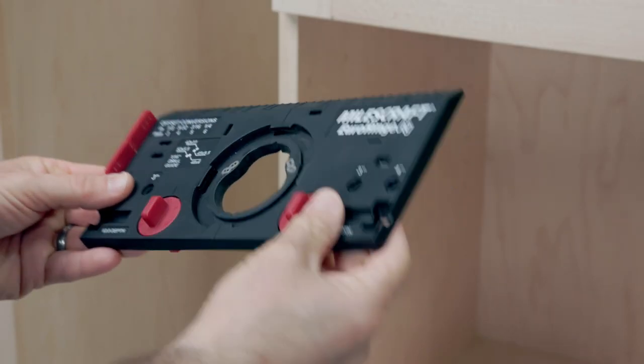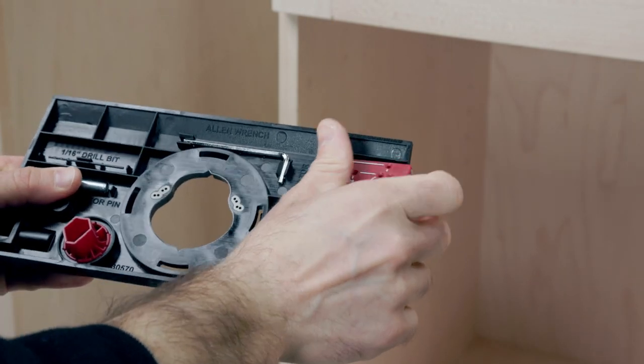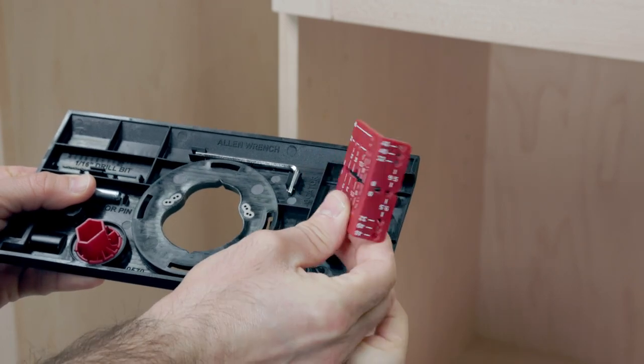To finish off your cabinet, the Euro Hinge Jig even has an included hinge marking guide to help position and mount your door to the cabinet.